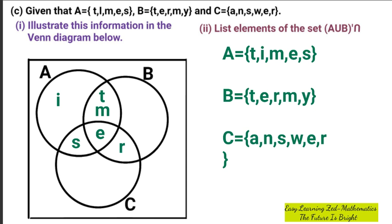M we have already talked about. Now Y — is Y found in set B? Yes. In set A? No. In set C? No. Therefore, Y will be in set B only, just like the way I've put it there.